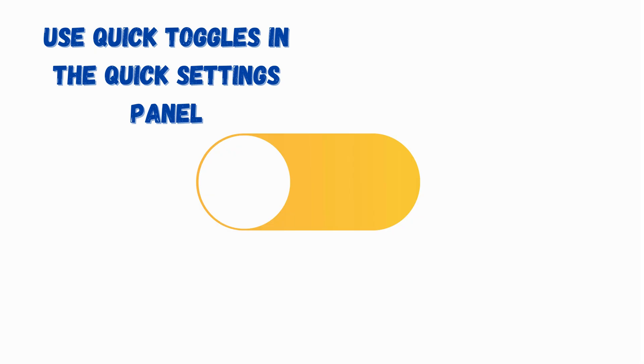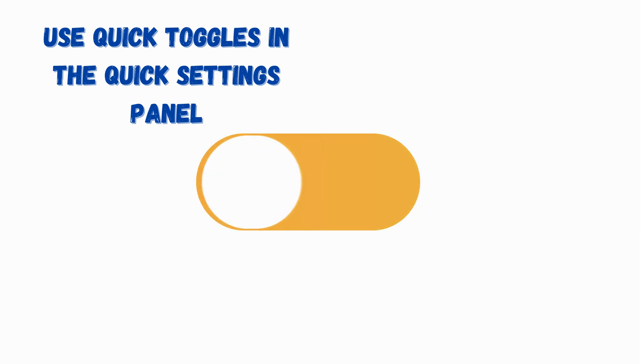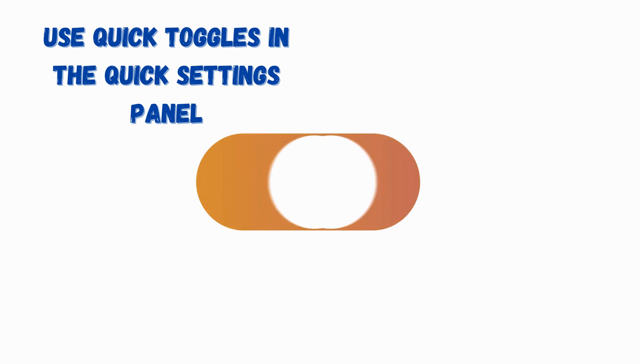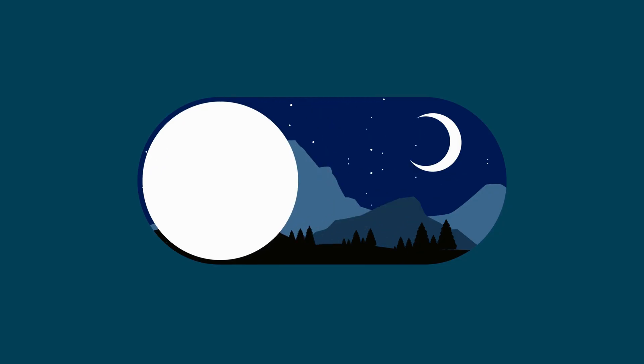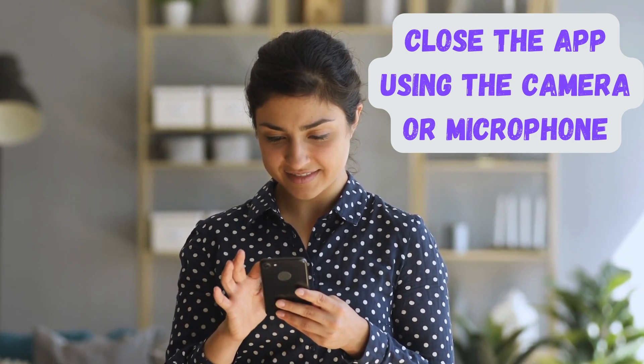Next, use Quick Toggles in the Quick Settings panel. An alternative method to temporarily turn off camera access and the green dot indicator is by using quick toggles. Pull down the notification panel, then pull down again to expand Quick Toggles. Look for the toggle labeled Camera Access and tap it to turn it off. This will temporarily disable camera access and hide the green dot indicator for that period.